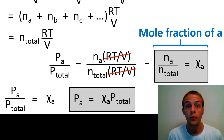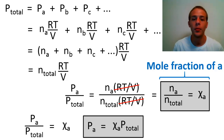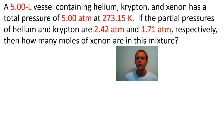Let's do an example problem using partial pressures. We have a 5.00-liter vessel containing helium, krypton, and xenon. The total pressure is 5.00 atmospheres, the temperature is 273.15 kelvins, and the partial pressures of helium and krypton are 2.42 atmospheres and 1.71 atmospheres respectively. How many moles of xenon are in this mixture?